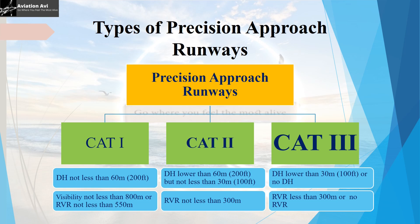A CAT-2 precision approach runway can accommodate landing down to a decision height lower than 60 meters but not lower than 30 meters, and it can accommodate safe landing down to an RVR not less than 300 meters. CAT-2 runways are more precise than CAT-1, so they can be used at a reduced RVR and the aircraft is brought closer to the runway compared to CAT-1.